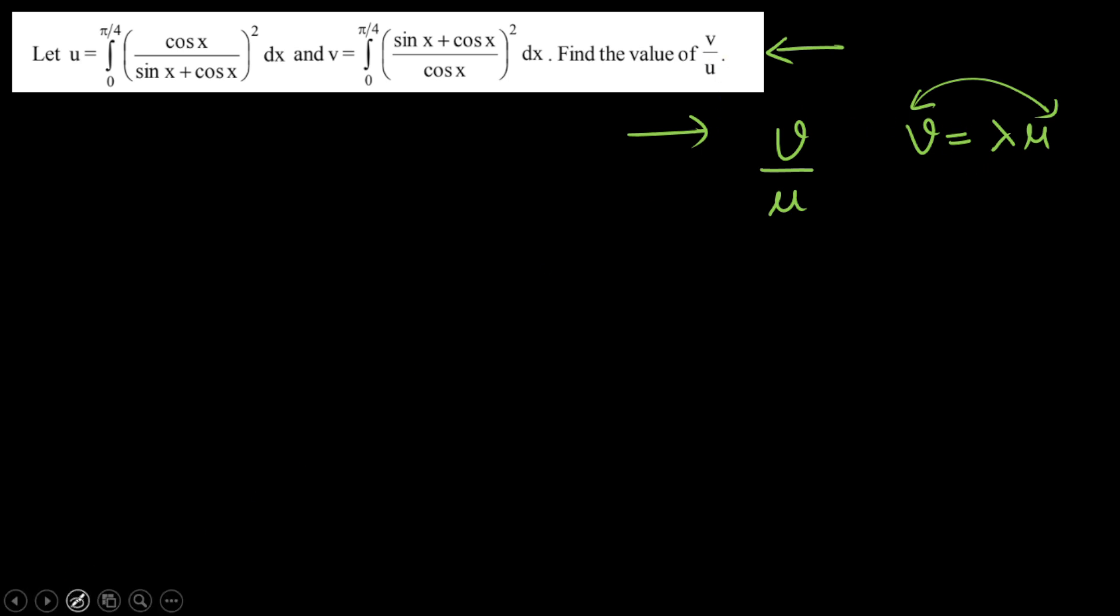So the moment you calculate this, you'll get v by u as λ. So let's start with the first integral u. u is integration 0 to π/4. Now I'm going to replace x by upper limit plus lower limit minus x. I'm going to apply King's property here.